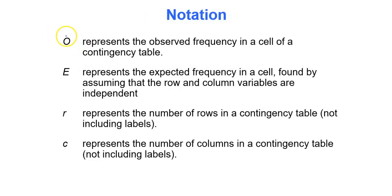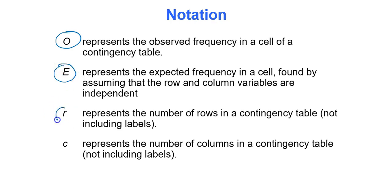Notation: big O represents the observed frequency in a cell of a contingency table, big E represents the expected frequency, R represents the number of row categories, and C represents the number of column categories.